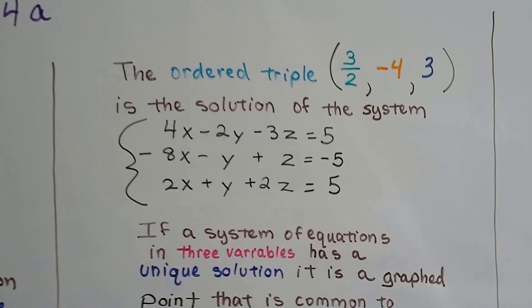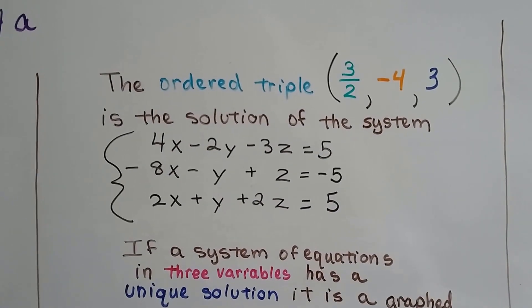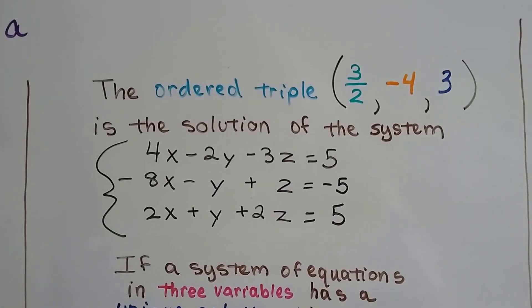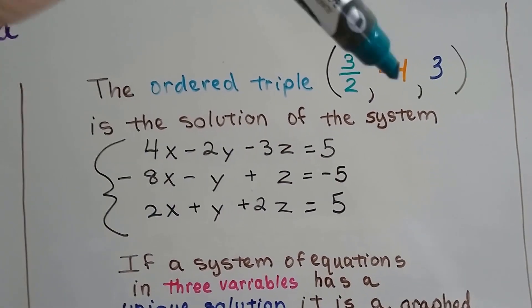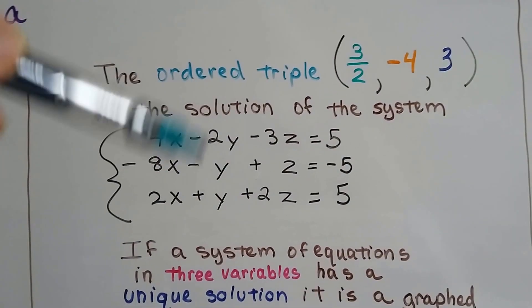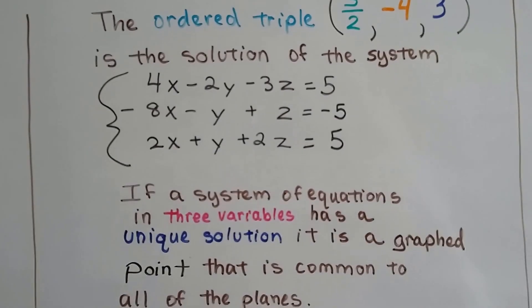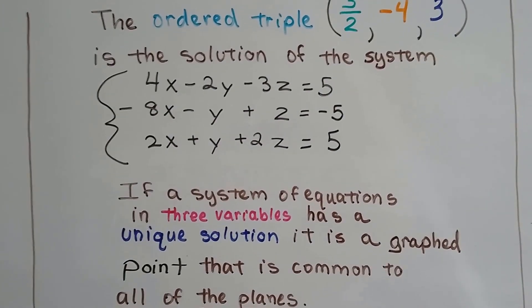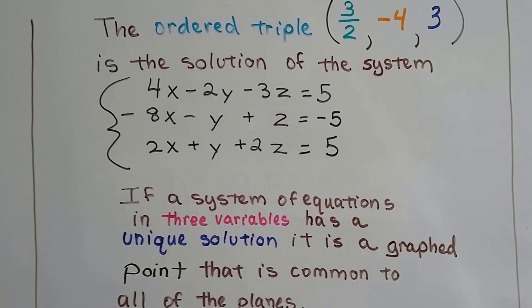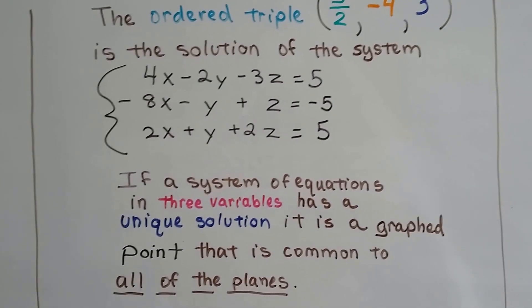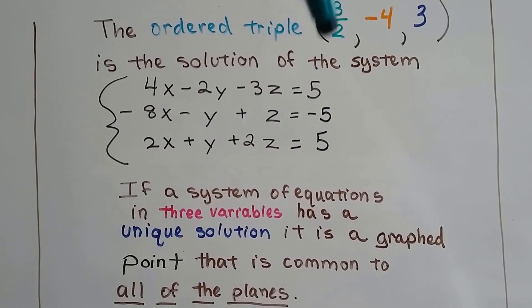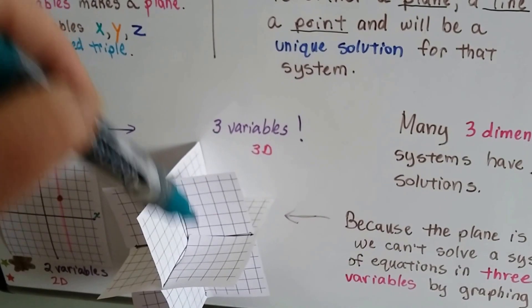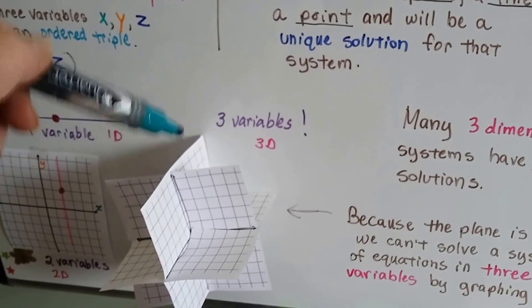The ordered triple (3/2, -4, 3) is a solution of this system of three equations. It's a solution for x, y, and z for all of these equations. If a system of equations in three variables has a unique solution like this, it's a graphed point that's common to all of the planes — where (3/2, -4, 3) met in one spot on this huge 3D plane.